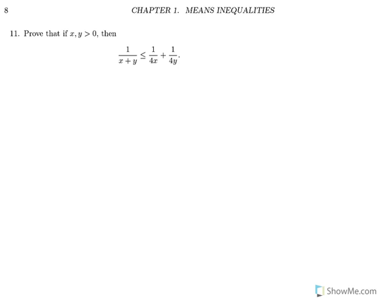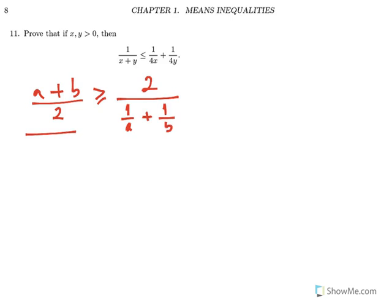Remember the AM-HM inequality for two terms. Here we have two terms: A plus B over 2 — this is the arithmetic mean — and that is greater than or equal to 2 divided by 1 over A plus 1 over B. So arithmetic mean is greater than or equal to harmonic mean.